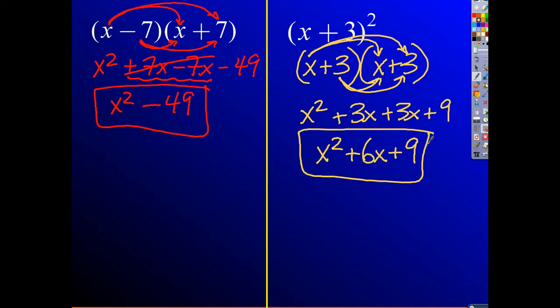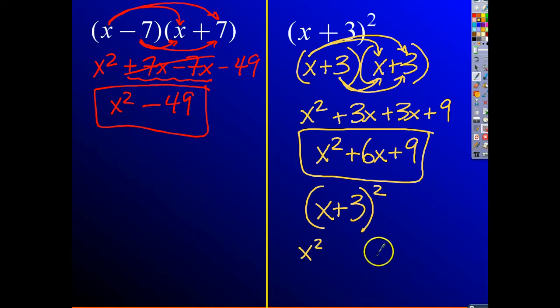The idea here is: if you have x plus 3 squared, you take x squared and 3 squared to get 9, and then you do 2 times x times 3 to get the middle term, 6x. So we actually did a little bit of this reverse factoring earlier in this chapter — I was trying to set you guys up for success with this.